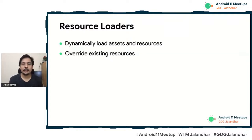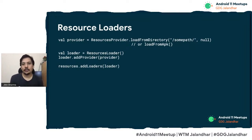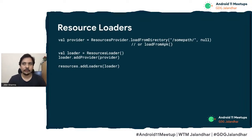Resource Loader is another new API in Android 11. It allows you to dynamically load assets and resources — drawables, colors, and more. You can override existing resources using the same key name, or add new resources downloaded from your server. There are two components: ResourcesProvider and the loader itself. The loader is added to the app's base resources. ResourcesProvider can load from a directory or APK that came from your server, containing new drawable, asset, or values files. Next time you request a resource by key, you get the newly downloaded version.